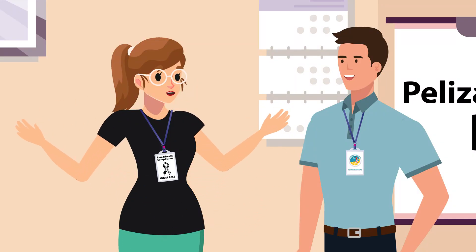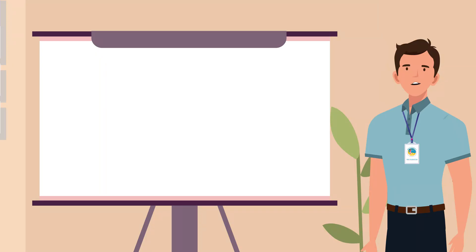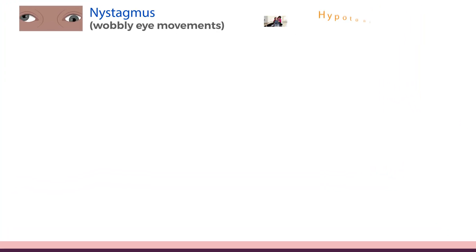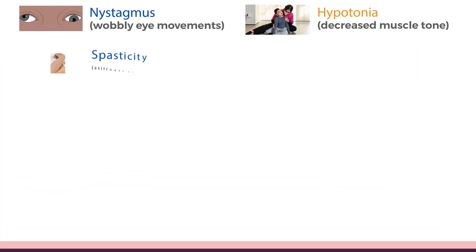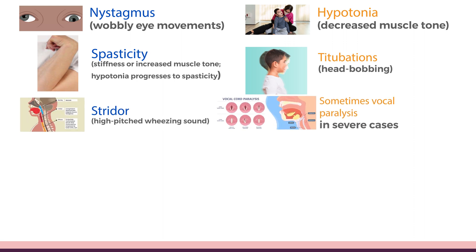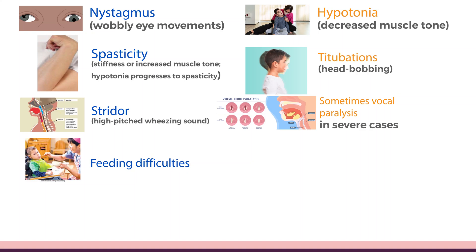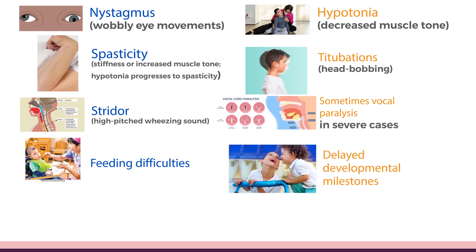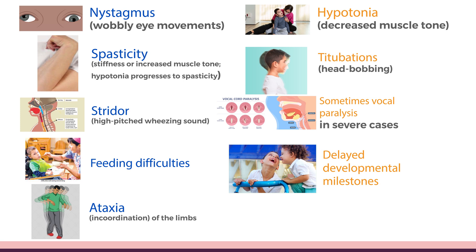What are the most common clinical signs of PMD? Clinical signs can be very similar to CP and can include nystagmus, hypotonia, spasticity, titubations, stridor, sometimes vocal paralysis in severe cases, feeding difficulties, delayed developmental milestones, and ataxia in coordination of the limbs. Severity of the disease is widely spread from milder forms to very severe forms.